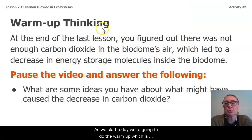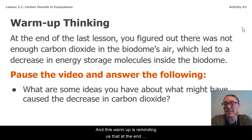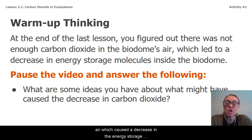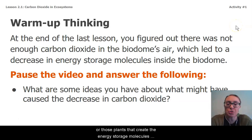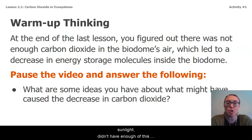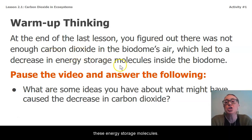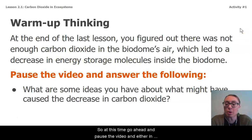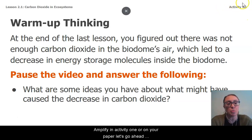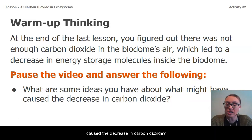As we start today, we're going to do the warm-up, which is activity one if you're following along in Amplify. This warm-up is reminding us that at the end of the last lesson, we figured out that there wasn't enough carbon dioxide in the biodome's air, which caused a decrease in the energy storage molecules inside the biodome. The producers — those plants that create energy storage molecules from carbon dioxide, water, and sunlight — didn't have enough abiotic carbon to turn into energy storage molecules. Go ahead and pause the video and answer this question: What are some ideas you have about what might have caused the decrease in carbon dioxide?